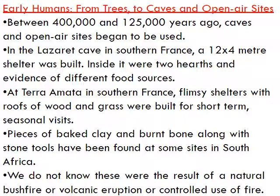Between 400,000 and 125,000 years ago, caves and open air sites began to be used. In the Lazaret cave in southern France, a 12 by 4 metre shelter was built inside, with two hearths and evidence of different food sources. At Terra Amata in southern France, shelters with roofs of wood and grass were built for short-term seasonal visits. Pieces of baked clay and burnt bones along with stone tools have been found at some sites in South Africa, though we do not know if these were results of a natural bush fire, volcanic eruption, or controlled use of fire.